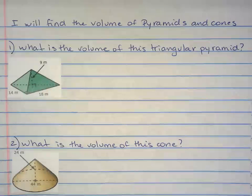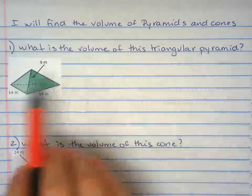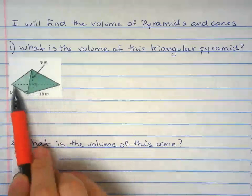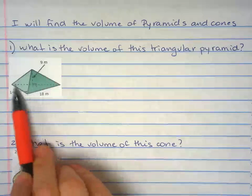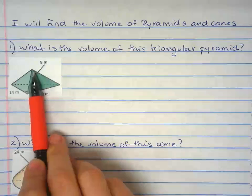We're finding the volume of pyramids and cones. So we need to find the volume of this triangular pyramid. Triangular because the base is in the shape of a triangle. Pyramid because they all meet at one point.